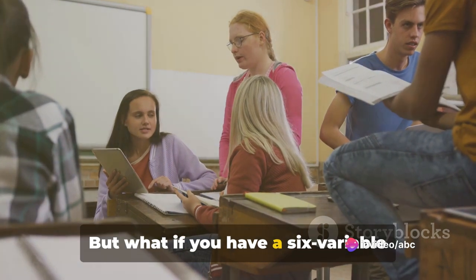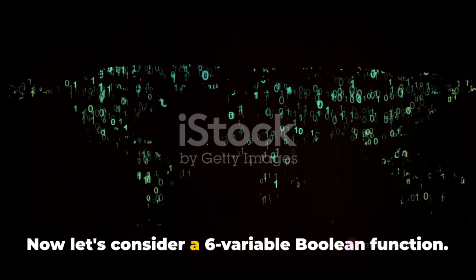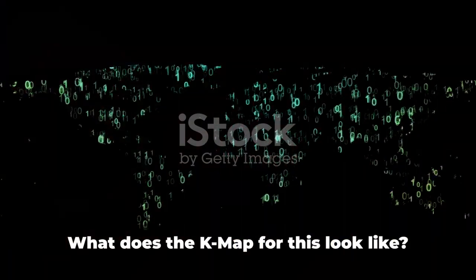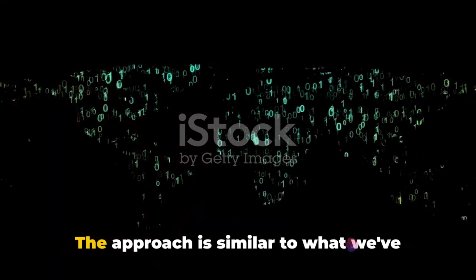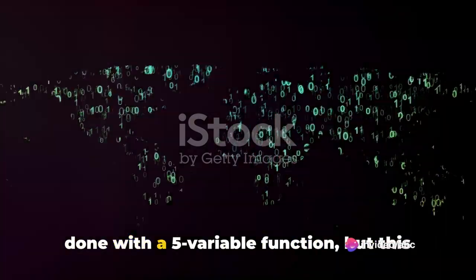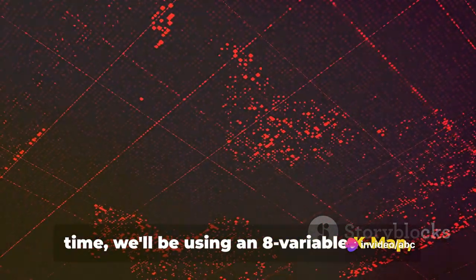But what if you have a 6-variable function? Well, stick around to find out. Now let's consider a 6-variable Boolean function. What does the K-Map for this look like? You may wonder. The approach is similar to what we've done with a 5-variable function. But this time, we'll be using an 8-variable K-Map, treating 2 variables as don't cares.